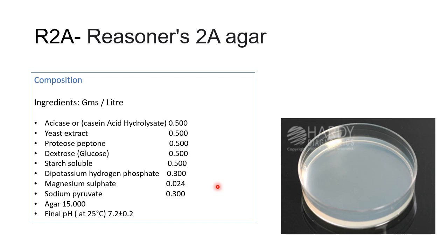Many bacteria from natural waters which contain limited nutrients at ambient temperature grow best on media with lower nutrient levels. Casein acid hydrolysate, proteose peptone, and yeast extract provide nitrogen, carbon compounds, vitamins, amino acids, and minerals. Dextrose serves as the energy source. Soluble starch aids in the recovery of injured organisms by absorbing toxic metabolites, while sodium pyruvate increases the recovery of stressed cells.